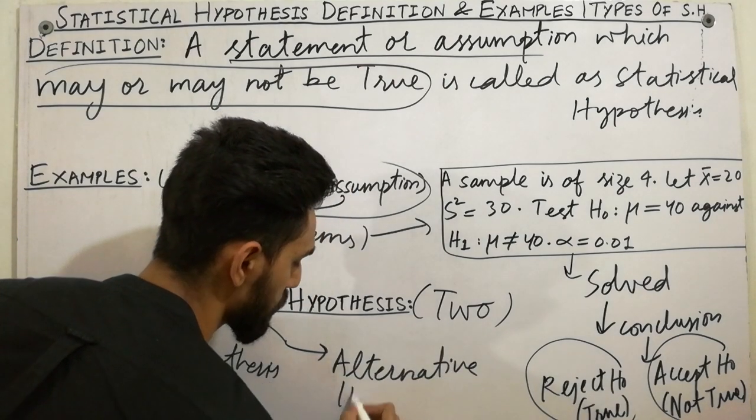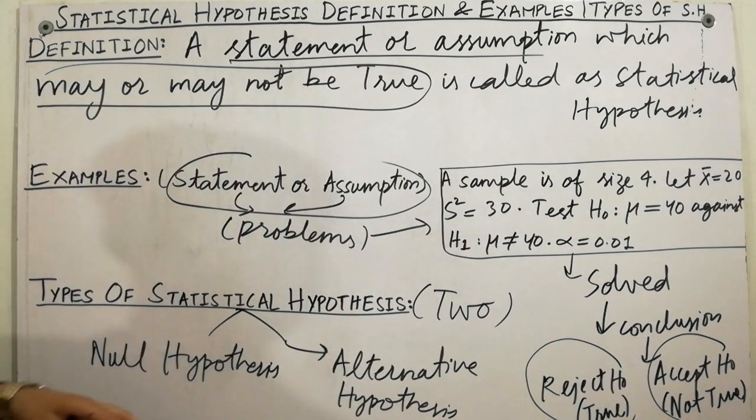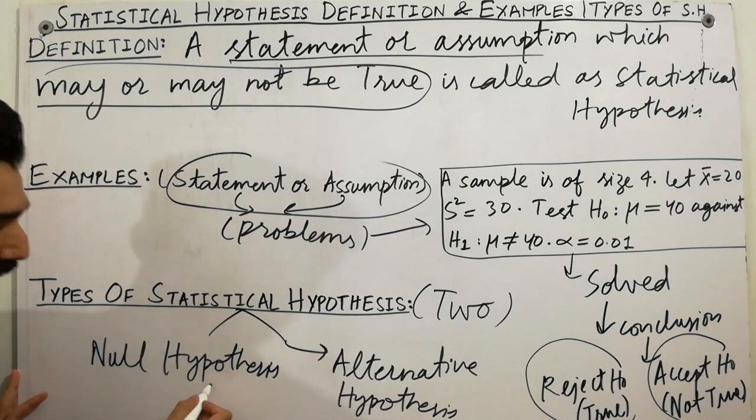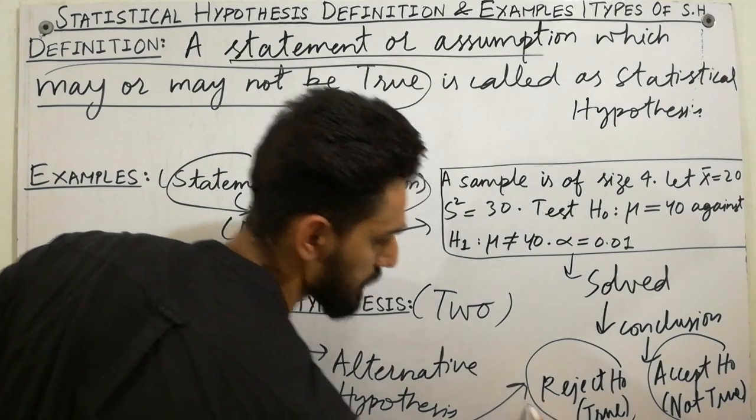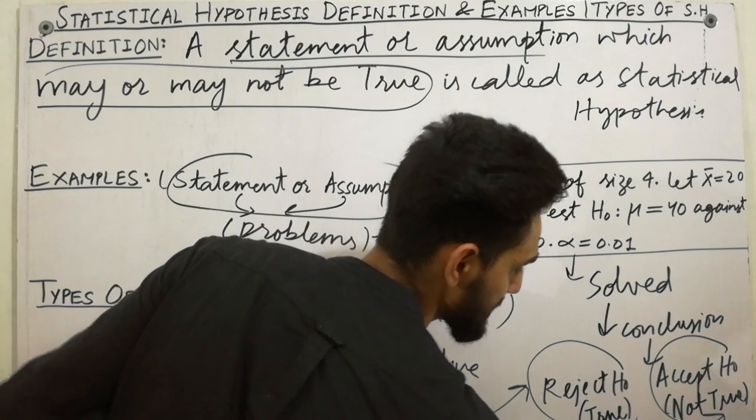Null hypothesis is any hypothesis which is to be tested for possible rejection, and alternative hypothesis is always for accept.